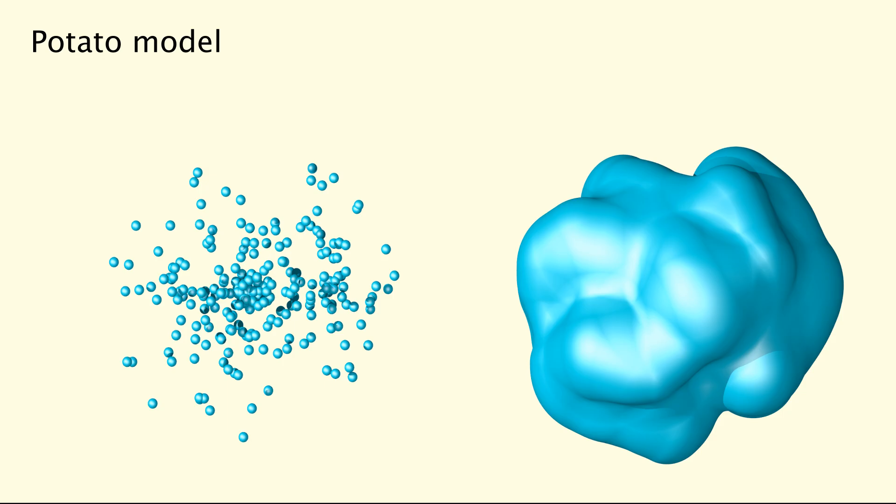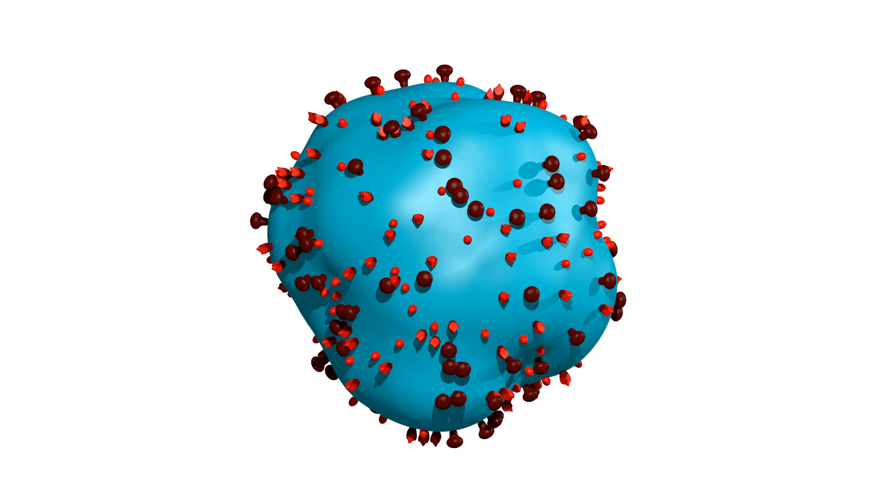Once you have your spheres distributed in a sphere-like way, you simply increase their radius and put them together into a blob. Here is your potato, or better, your enveloped virus. The only thing missing are its membrane proteins. They have to stick to the shape and they have to be perpendicular to it. How do we model this?